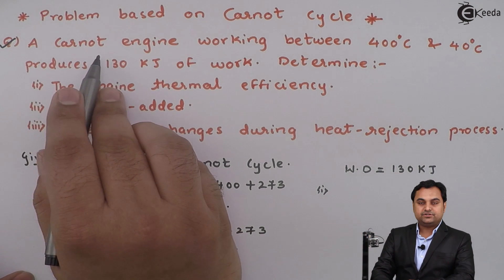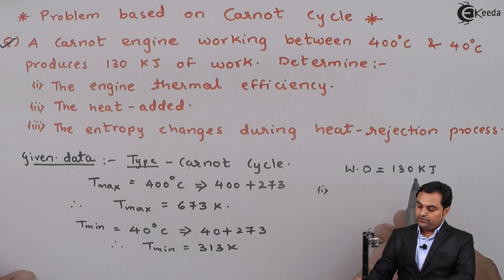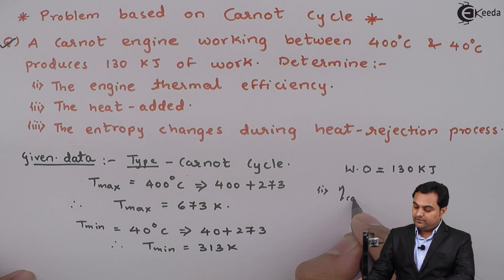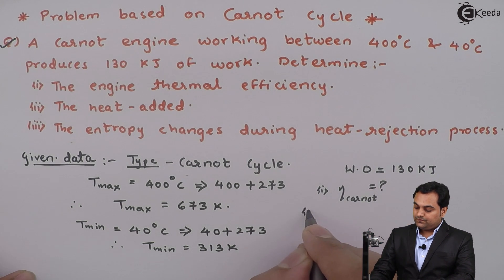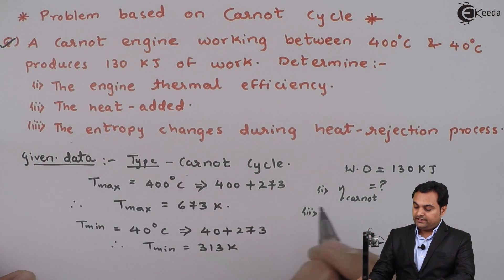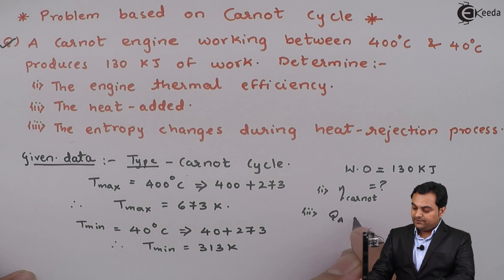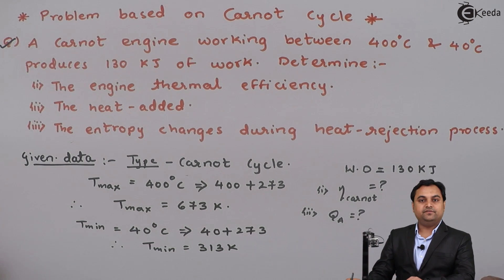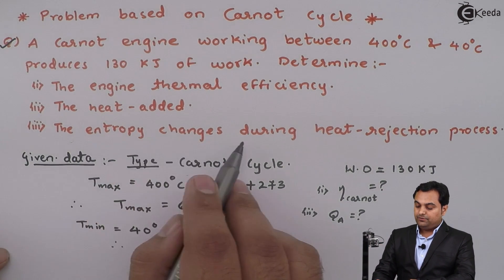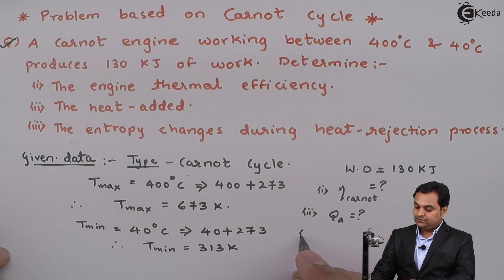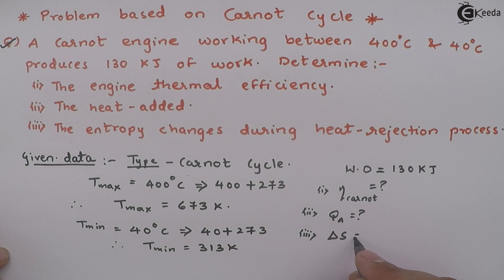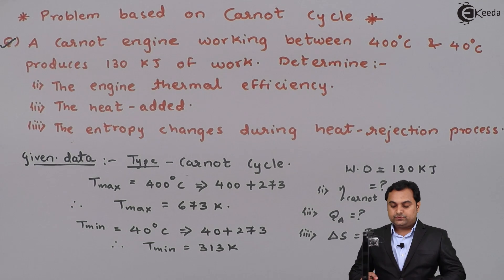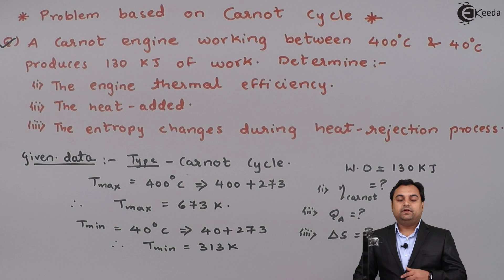We need to determine three things: the engine thermal efficiency, which is the Carnot efficiency; the heat added Q_A, which is the heat supplied during the process; and the entropy change during the heat rejection process, denoted by Delta S. Now with this data, let us find the solution.